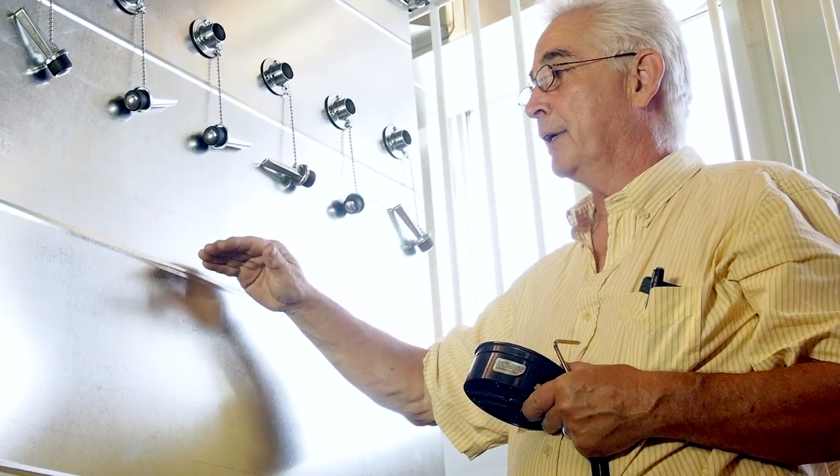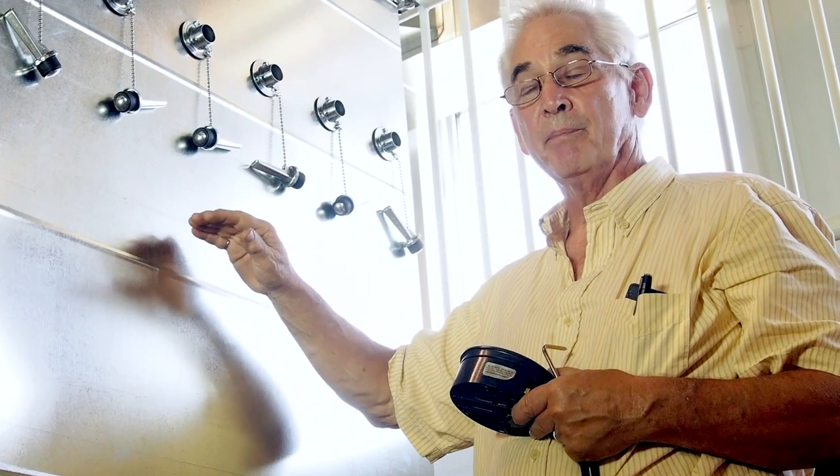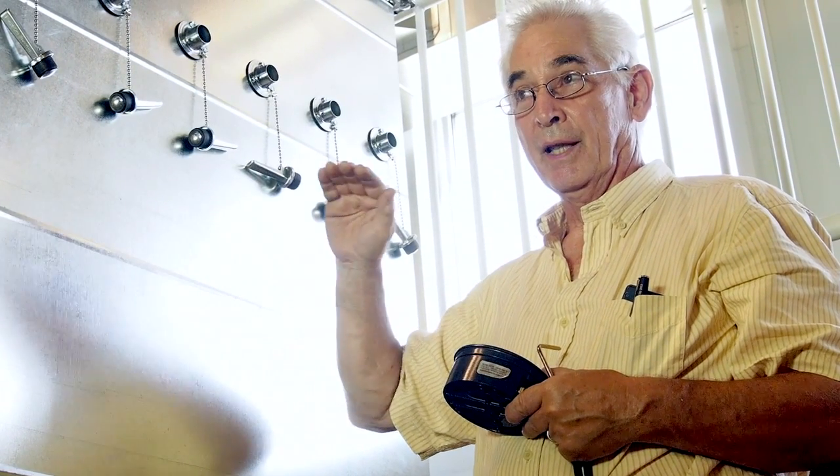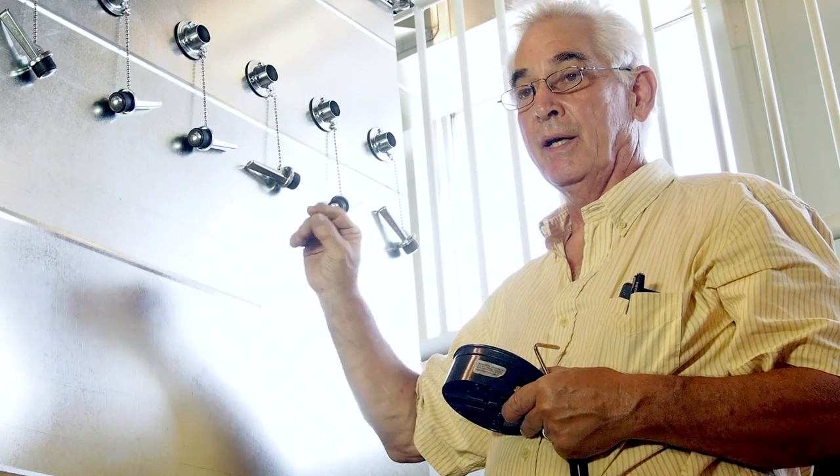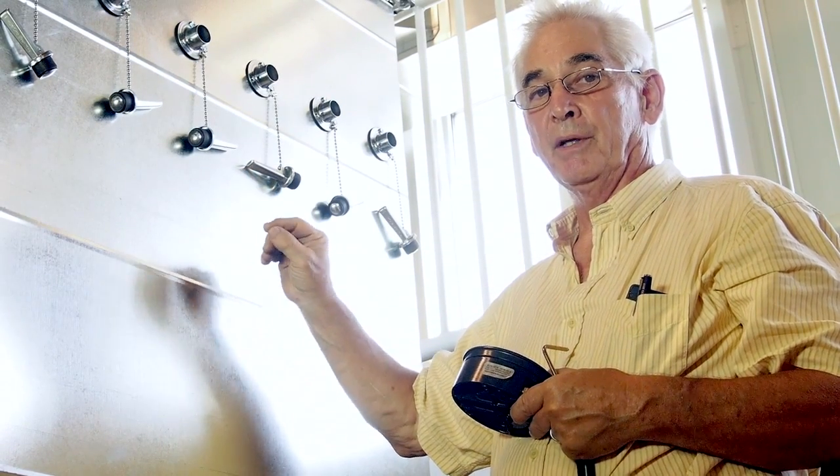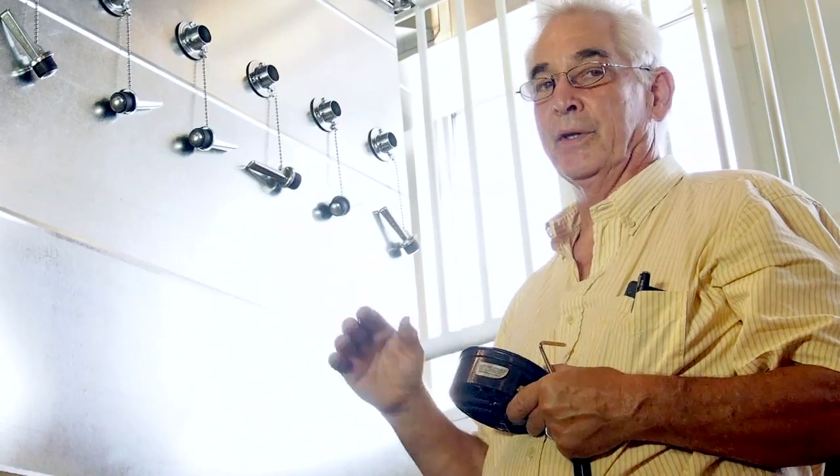So, if we calculated 1,100 feet per minute, 1,100 feet per minute times 4 feet squared is 4,400 cubic feet per minute flowing through this duct.